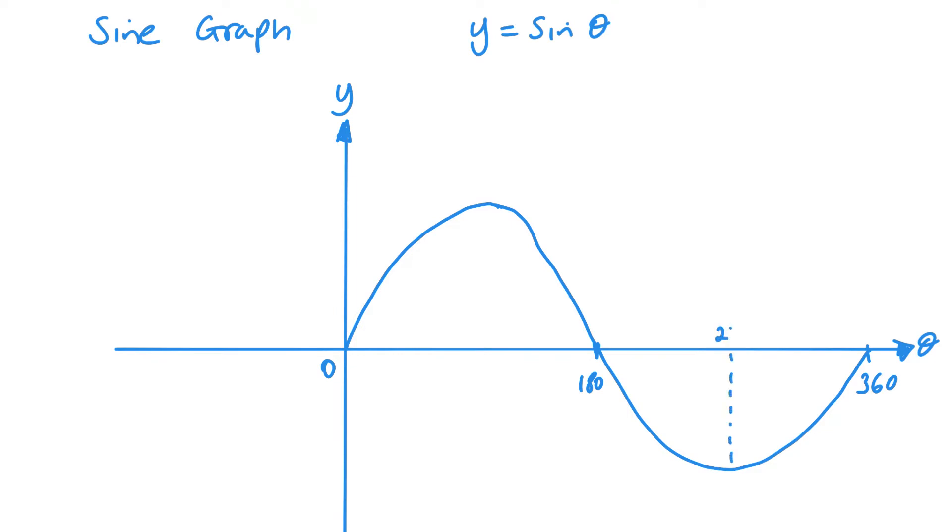And then the values in between are 270 and 90. At 90 degrees it will cross at one. At 270 it will cross at negative one. And that is the sine graph between zero and 360.